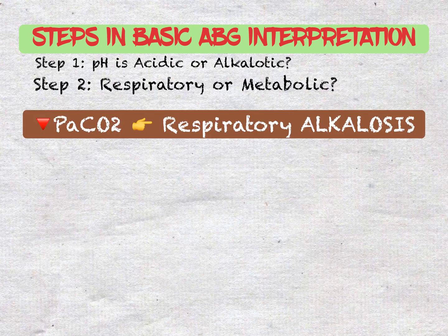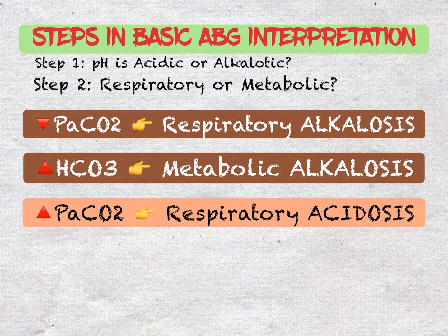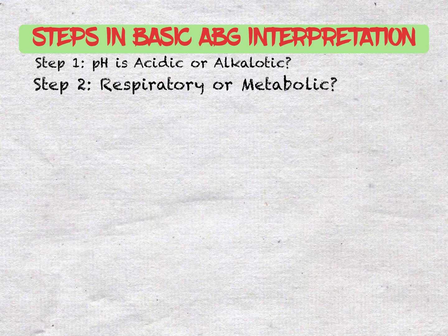Low PaCO2 points to respiratory alkalosis, and high HCO3 can indicate metabolic alkalosis. On the other hand, high PaCO2 indicates respiratory acidosis, and low HCO3 can indicate metabolic acidosis. As carbon dioxide combines with water in the blood, it forms carbonic acid, making the blood acidic. The carbonic acid then breaks apart into bicarbonate ions and hydrogen, and it is the hydrogen that makes the blood acidic.